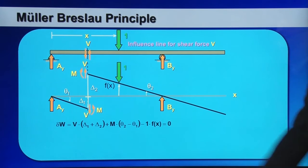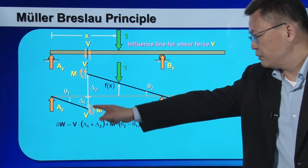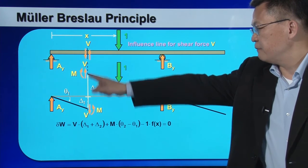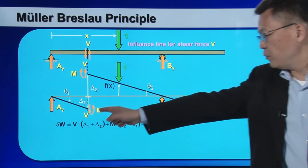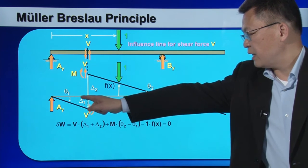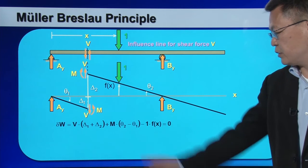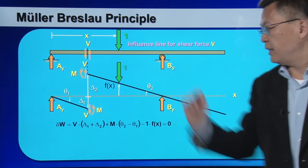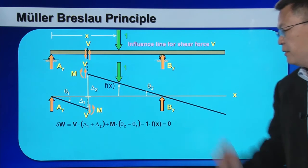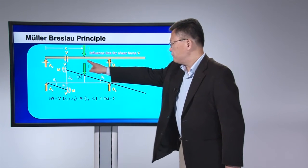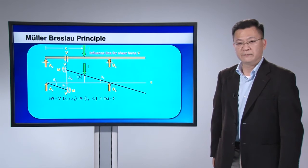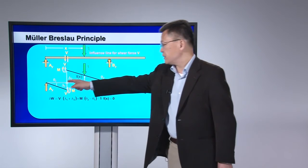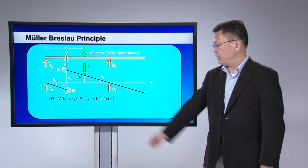Here are the virtual work calculations. Shear force on the left contributes V times delta one, and shear force on the right contributes V times delta two. The bending moment times theta one contributes negative virtual work since they are in opposite directions, while M times theta two contributes positive virtual work as they are aligned. The downward unit force contributes negative virtual work. Since supports A and B are held stationary, Ay and By do not contribute to the virtual work calculations.